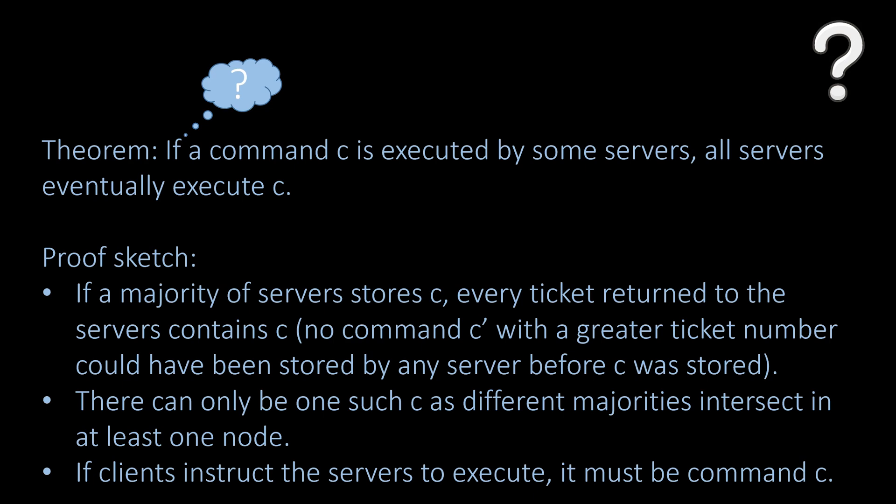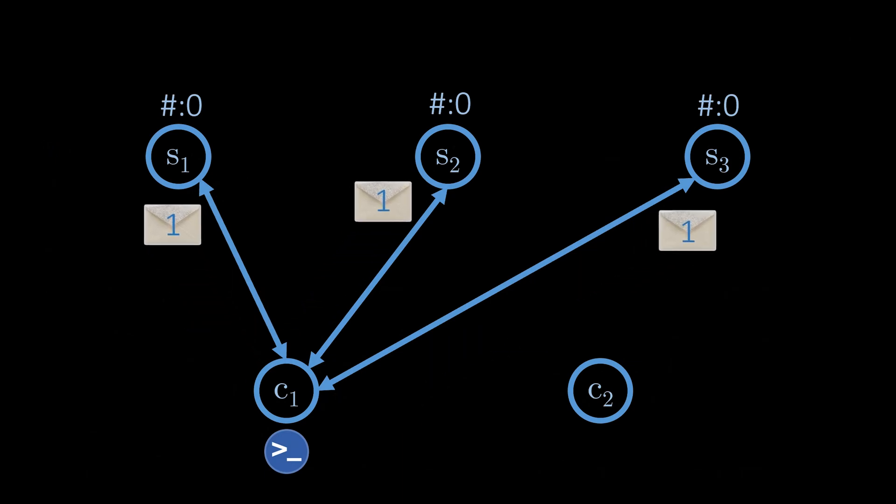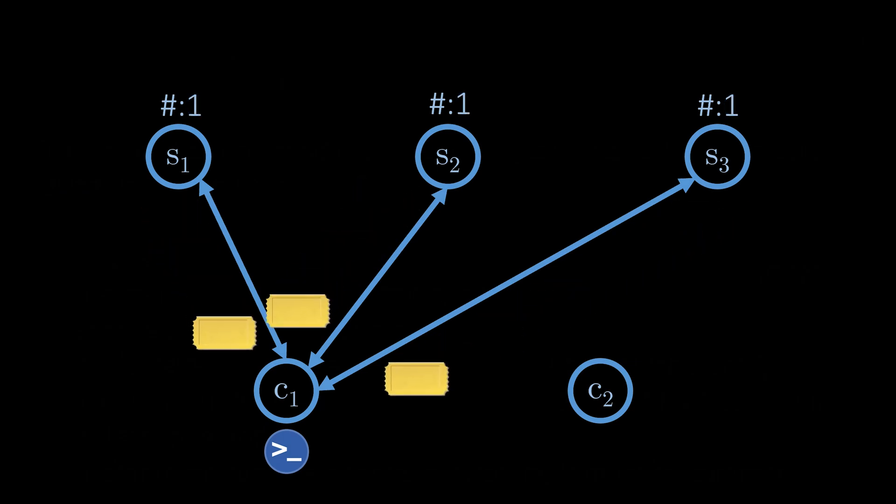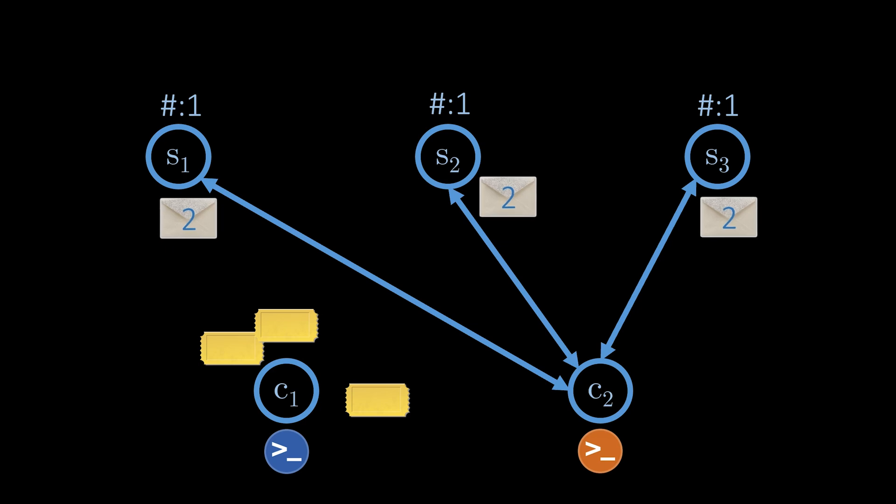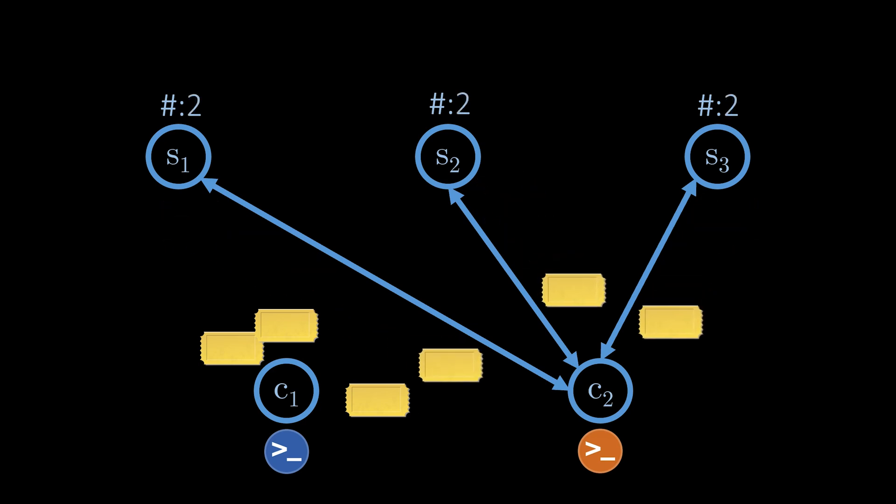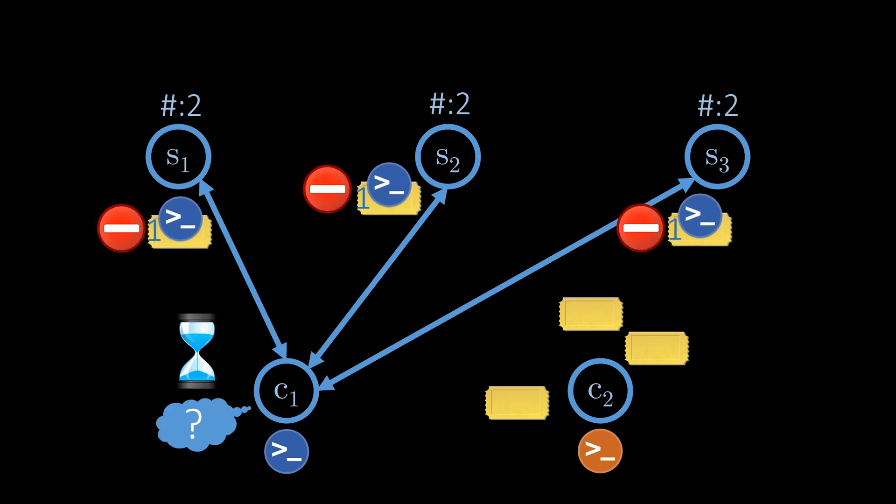Why is that? Let's consider this execution. Client 1 requests tickets for ticket number 1. The request is granted and the tickets are returned. Now, client 2 requests tickets for ticket number 2. This is the next higher ticket number, so this request is granted and tickets are returned. Client 1 then sends its command for ticket number 1 to the servers. However, the servers are already at ticket number 2, so the tickets used by client 1 are no longer valid and no command is stored.